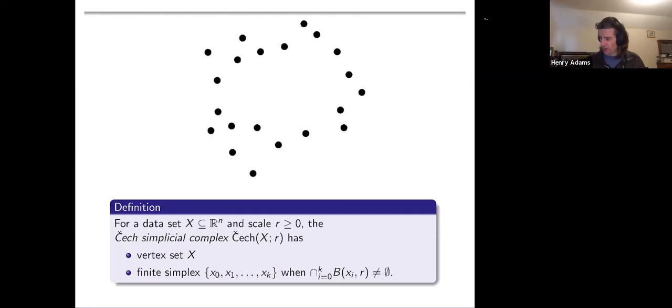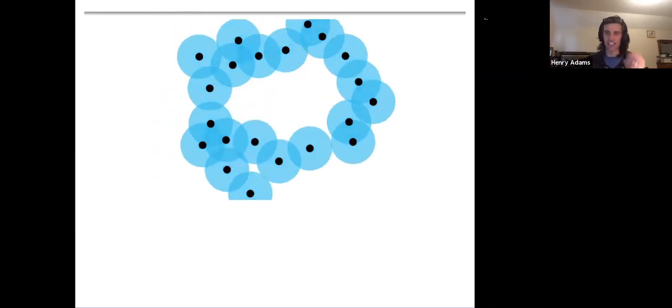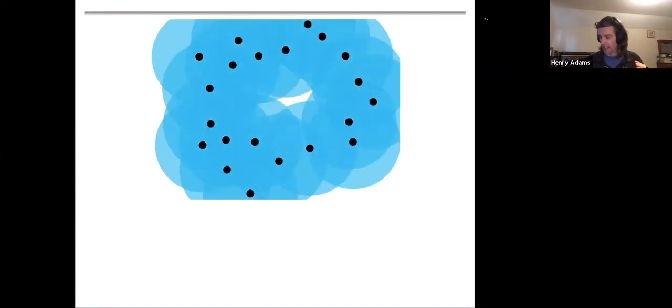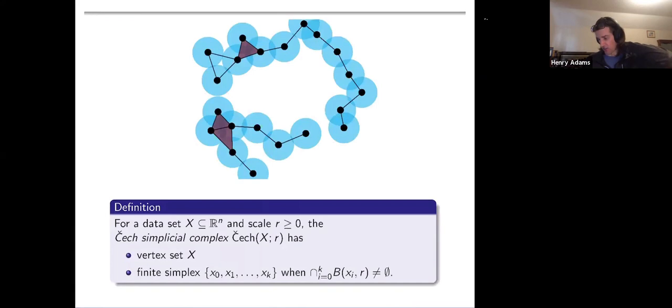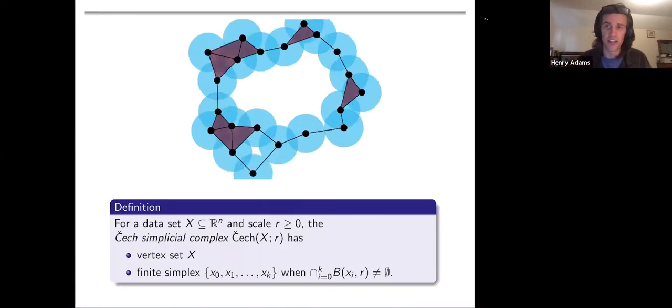Yeah, so the balls are maybe how you think of data sets when you just look at a picture in 2D or 3D. And then these vertices and edges and triangles are what you actually store in a computer, but they're the same shape up to homotopy equivalence that we've talked about a little bit. So the union of the blue balls is the same shape up to homotopy equivalence as all these vertices, edges, and triangles glued together. Just imagine pushing the blue balls in and collapsing down onto the red shape.